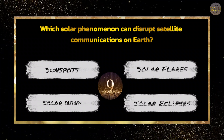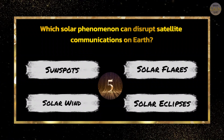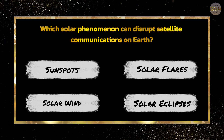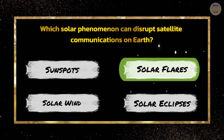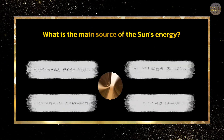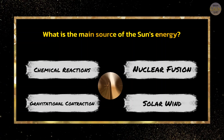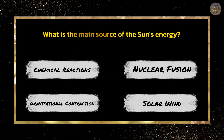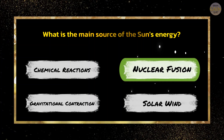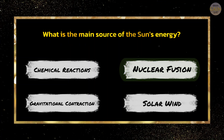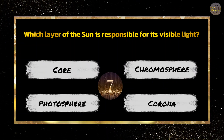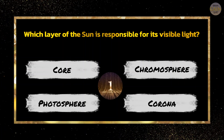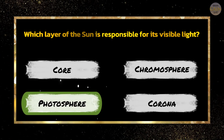Which solar phenomenon can disrupt satellite communications on Earth? Solar flares. What is the main source of the Sun's energy? Nuclear fusion. Which layer of the Sun is responsible for its visible light? Photosphere.